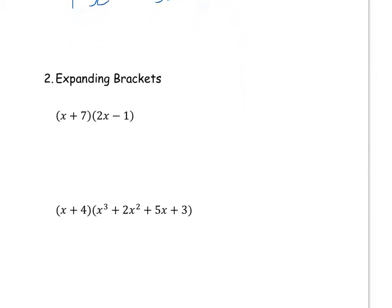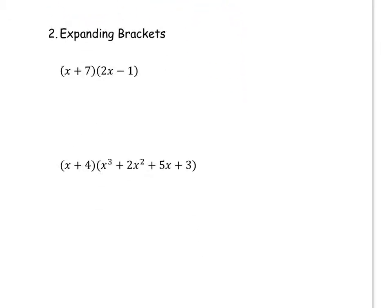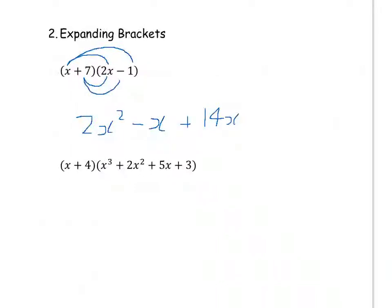Part two is to do with expanding brackets. Remember, this means you've got to multiply everything in the left-hand bracket by everything in the right-hand bracket. So x times 2x is 2x squared, x times minus 1 is minus x, 7 times x is 14x, and 7 times minus 1 is minus 7.